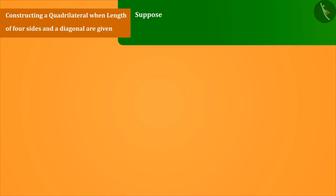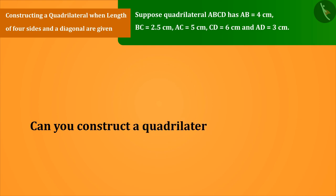Suppose quadrilateral ABCD has AB equals 4 cm, BC equals 2.5 cm, AC equals 5 cm, CD equals 6 cm, and AD equals 3 cm. Can you construct a quadrilateral ABCD?